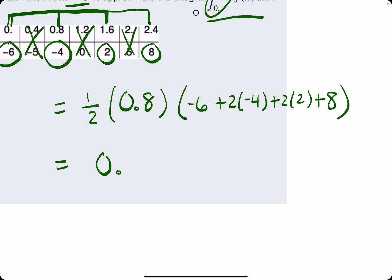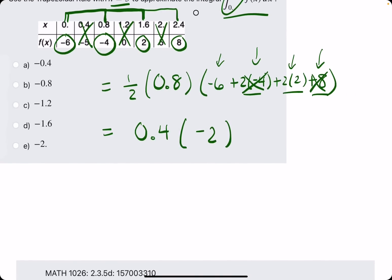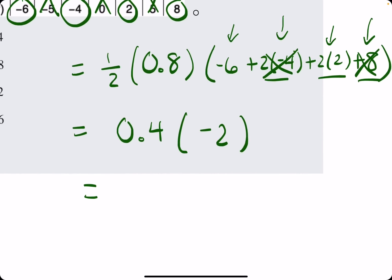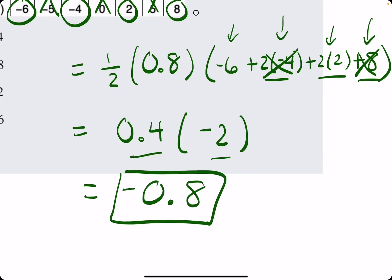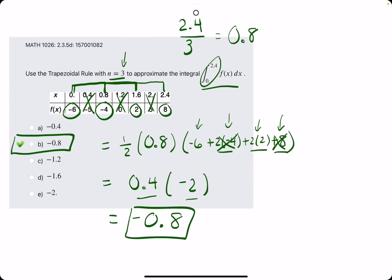I'll go ahead and call that 0.4 — half of 0.8 is 0.4. On the inside, we have negative 6 plus negative 8 plus 4 plus 8. Negative 8 cancels with positive 8. And then we have negative 6 plus 4, that's negative 2. And then 0.4 times negative 2, just getting it back to that 0.8 and keeping the negative. So looks like B is our answer. Once we break out the eraser, we confirm that.